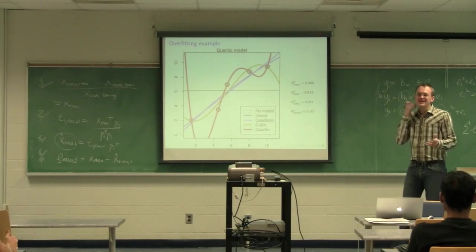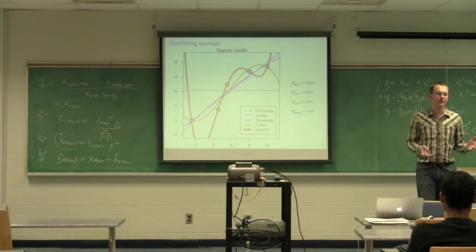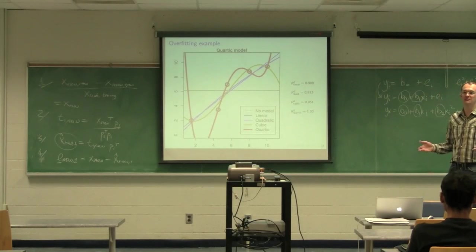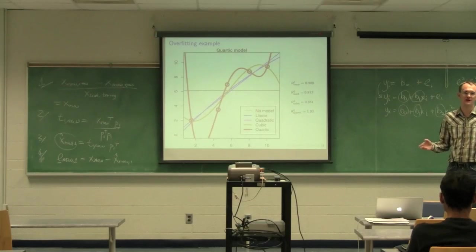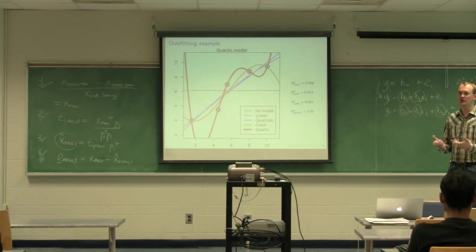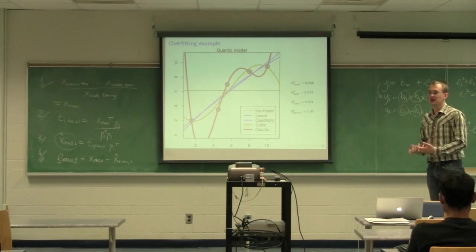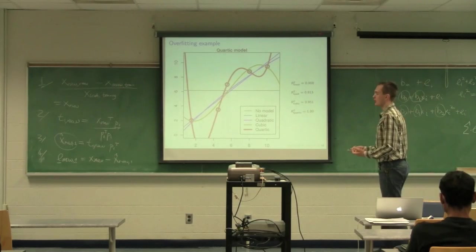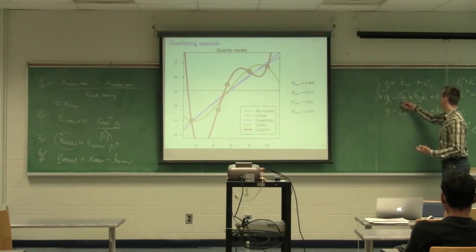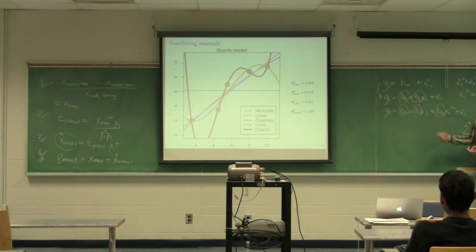I mean, this is exactly the problem with determining the number of components in a PCA model. There is no correct answer. You can argue from so many different angles and depending on your usage case, one component, two components, or in this particular instance, one parameter, two parameters, three parameters, might suit your needs. And that's the point I want to get across.